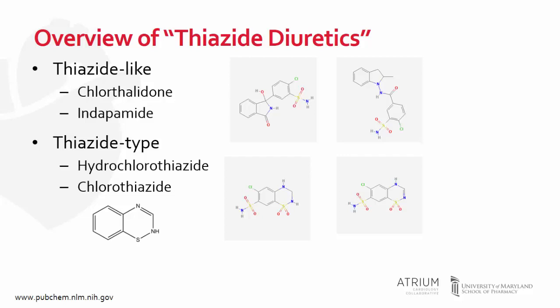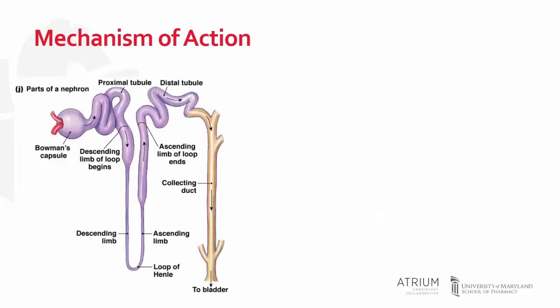As a brief introduction to these drugs, thiazides were first discovered somewhat serendipitously in the search for a better carbonic anhydrase inhibitor. When thiazides were first introduced in the 1950s, they were among the first oral diuretics and, interestingly, were used predominantly for volume overload in heart failure patients. It was quickly identified that these agents had antihypertensive effects and their use for this indication was pursued shortly thereafter.